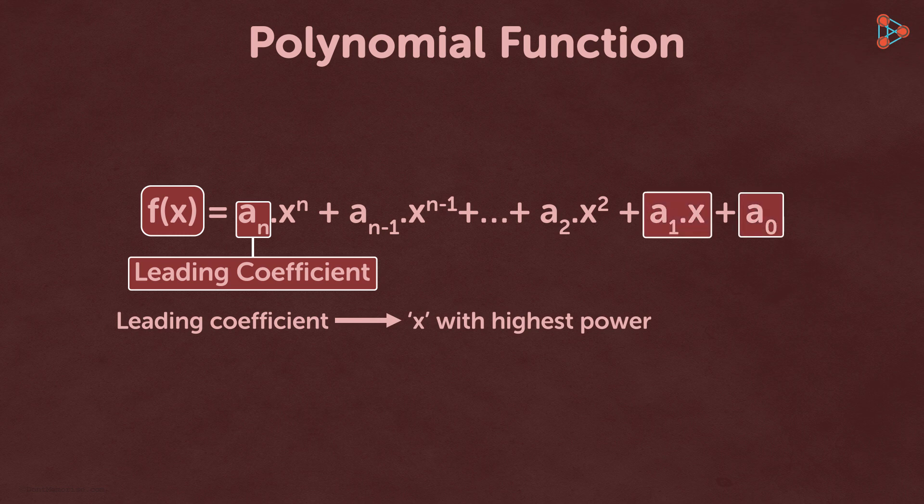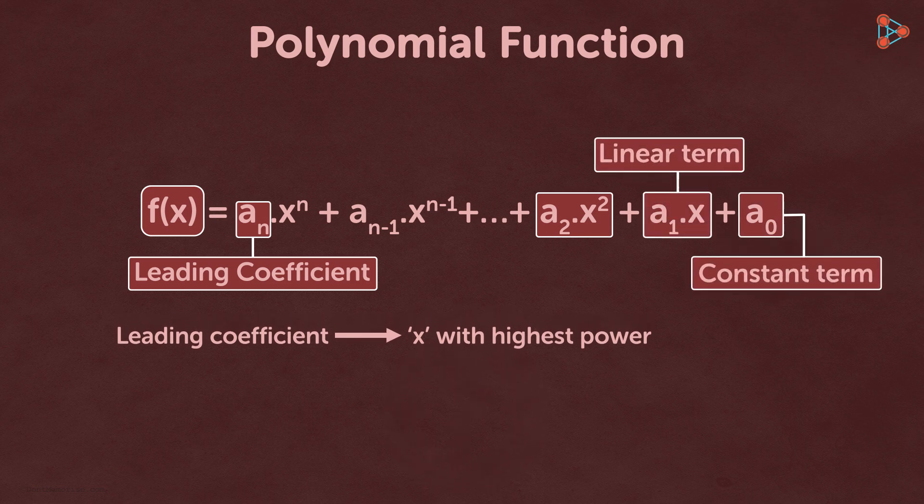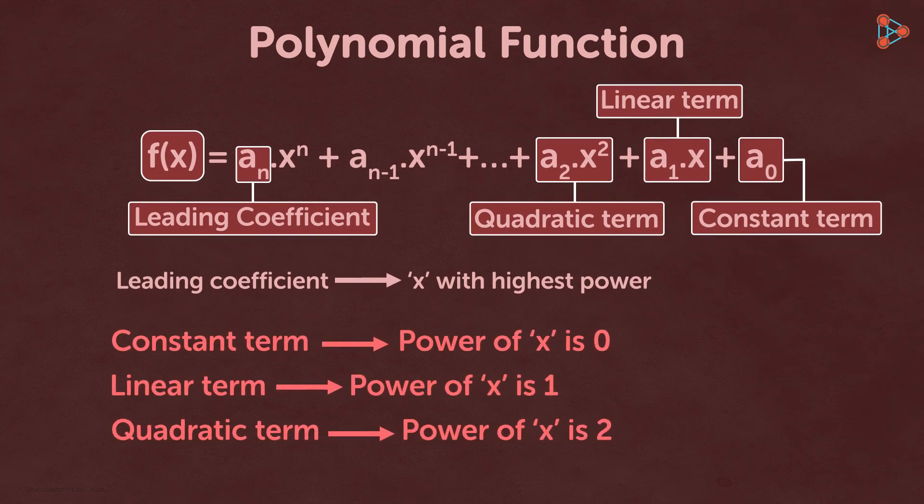Can you guess what the terms a_0, a_1 times x, and a_2 times x squared are called? They are called the constant term, the linear term, and the quadratic term respectively. This is because the power of x in each of these terms is 0, 1, and 2 respectively.